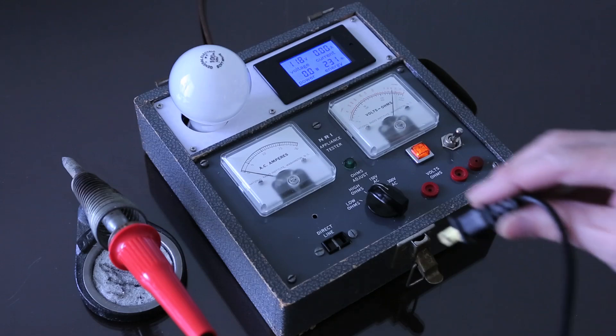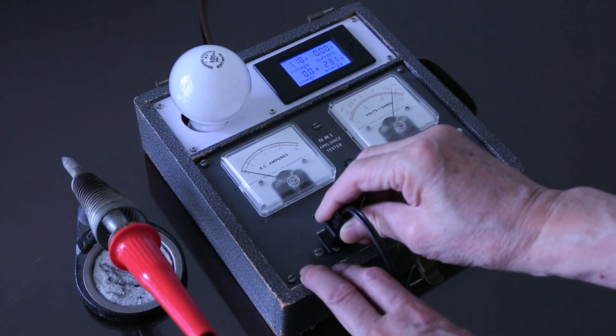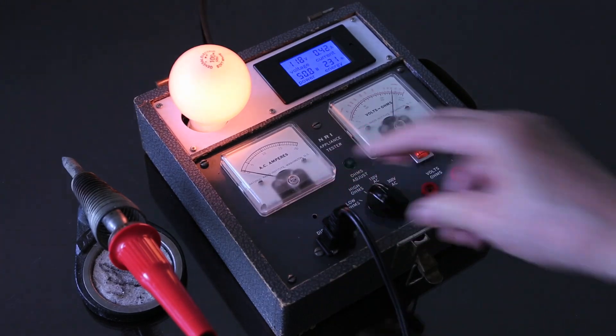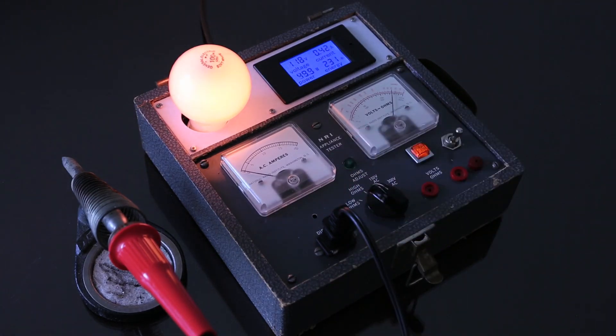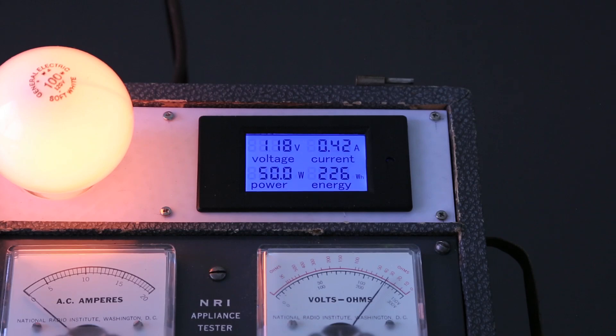When I plug the soldering iron into the tester, the bulb glows brightly. And the digital meter indicates 420 milliamps and 50 watts.